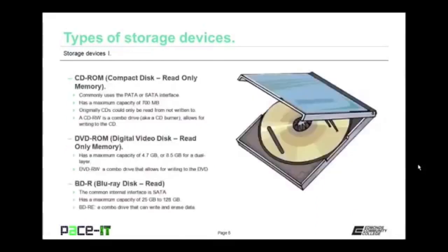Now let's move on to the CD-ROM, the compact disk read-only memory. When these first came out, they commonly used the PATA interface, but now you'll more than likely find them with the SATA interface. The CD-ROM has a maximum capacity of 700 megabytes. Originally, CDs could only be read from and not written to, but as technology advanced, things changed. Now a CD-RW is a combo drive — also known as a CD burner — that allows for writing data to the CD.